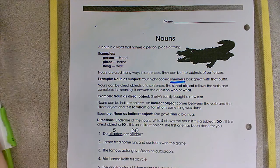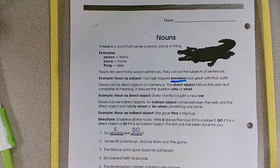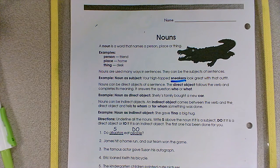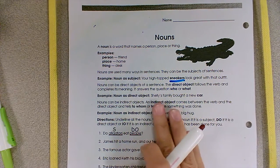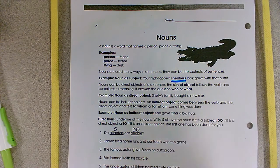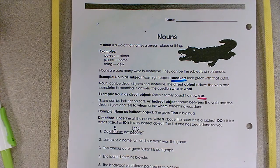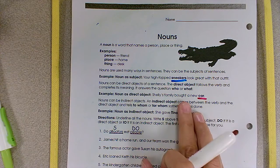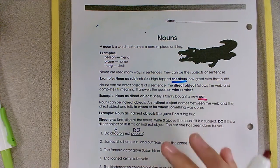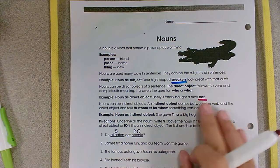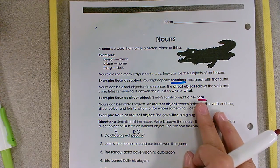Nouns can also be the direct object of a sentence. The direct object comes after the verb and completes its meaning. It answers the question who or what. So an example would be, Shelly's family bought a new car. Car would be the direct object. One way that I think about it is after I come to the verb, Shelly's family bought, I ask, what? Shelly's family bought what? A car. Whatever the answer to my question is, is going to be our direct object.